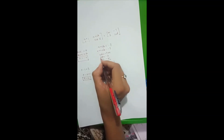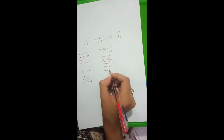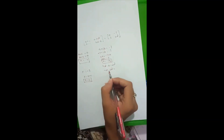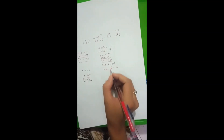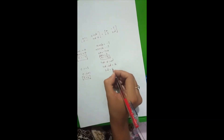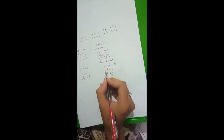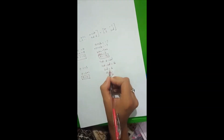For the equation 4d minus 6 equals 2d: moving 2d to the left gives 4d minus 2d equals 6, so 2d equals 6, and d equals 6 over 2 equals 3. So our final answers are: a equals minus 4, b equals minus 3 over 2, c equals 4, and d equals 3.